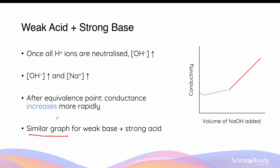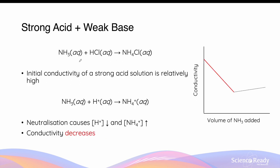A similar conductivity graph is observed for a titration with a weak base in the beaker and a strong acid added from the burette. In a conductometric titration where a strong acid is in the beaker and a weak base is added from the burette, the conductivity starts off relatively high because the strong acid completely dissociates. As the weak base, such as ammonia, is added to neutralize the hydrochloric acid, the concentration of hydrogen ions decreases due to neutralization. Although the ammonium ion concentration is increasing, the conductivity still decreases because hydrogen ions are much more conductive than ammonium ions.